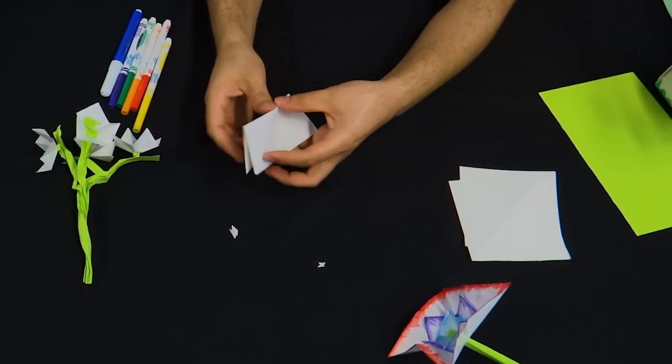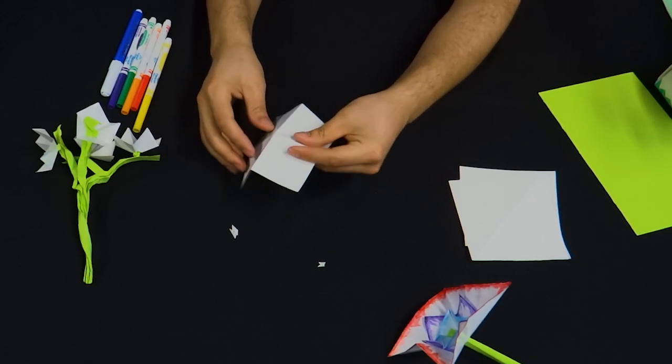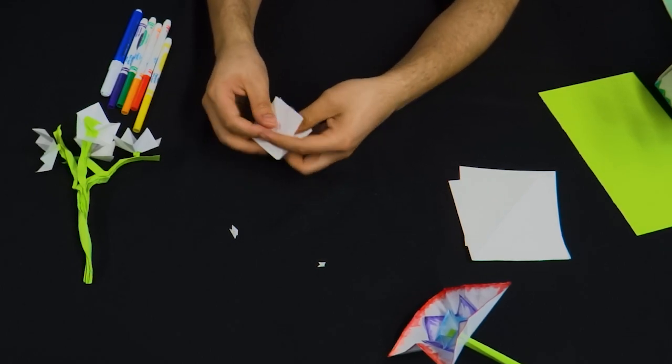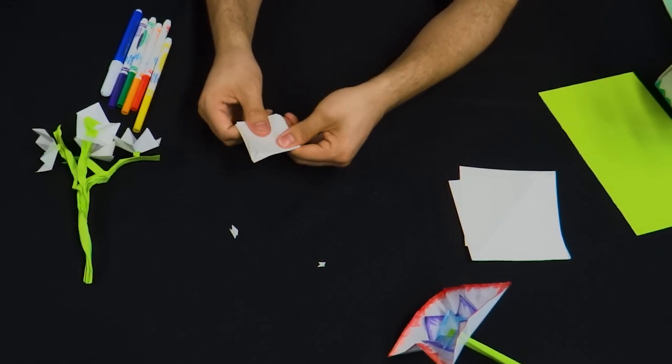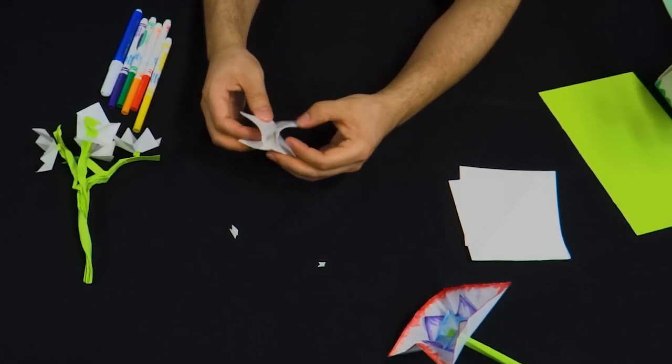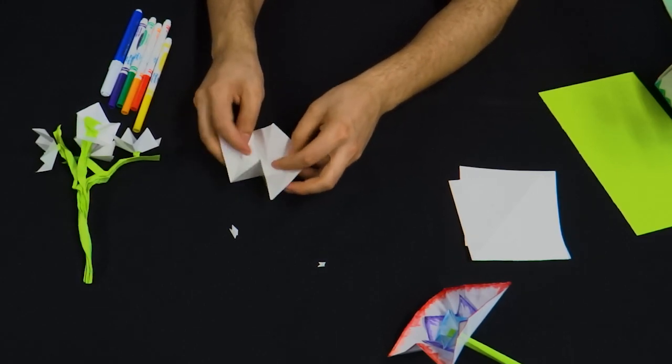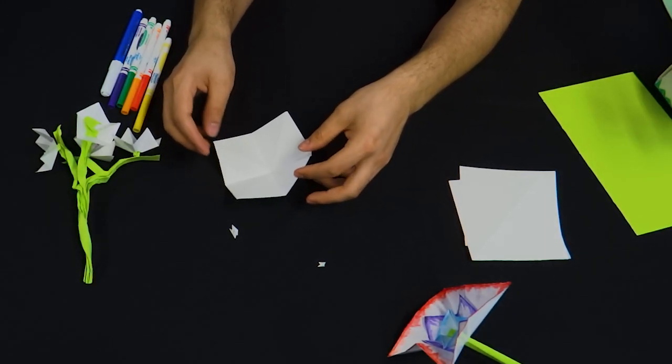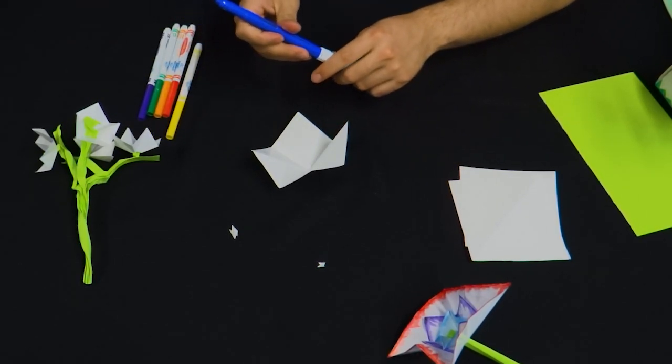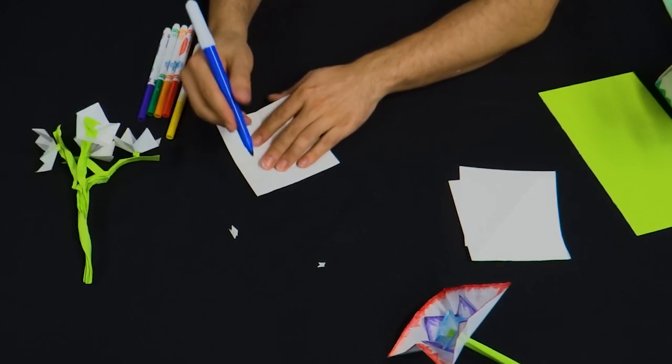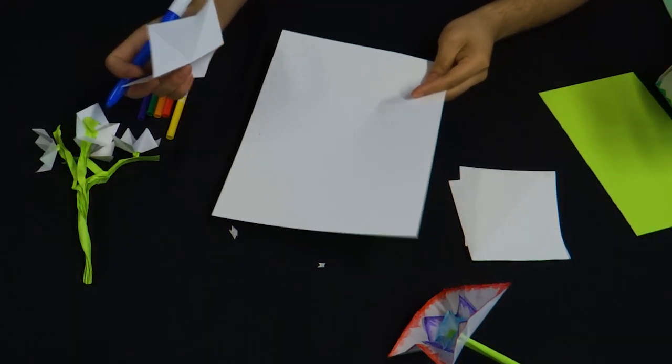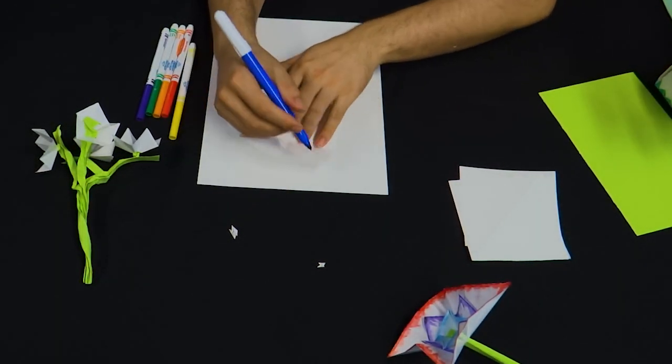When I fold, matching the edges, holding that, once I've matched, holding that down, now I can sort of press the line down. Nice little fold. So from there, I kind of pinch this paper so I have this sort of a shape.